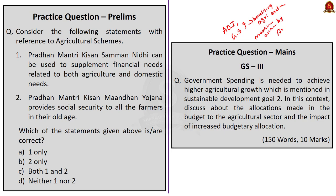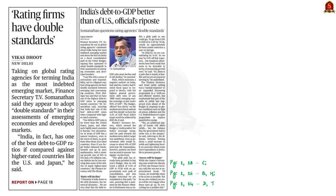The next article refers to global rating agencies which termed India as the most indebted emerging market. Finance Secretary T.V. Somanathan argued that global rating agencies appear to have adopted double standards in their assessment of emerging economies and developed markets. He also added that India has one of the best debt-to-GDP ratios when compared to the United States and Japan. In this context, we will learn about bond yield and how it is related to the debt-to-GDP ratio.